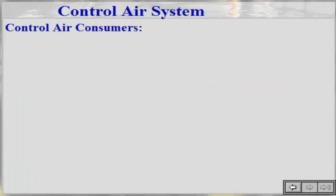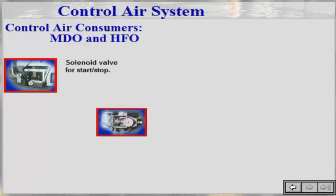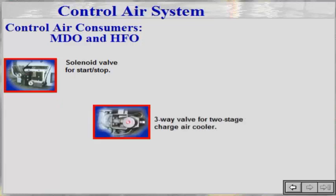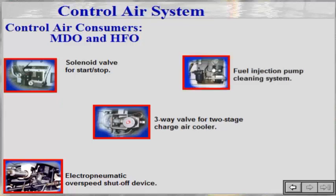The control air consumers: solenoid valve for stop/start, 3-way valve for 2-stage charge air cooler, electro-pneumatic overspeed shut-off device, fuel injection pump cleaning system.